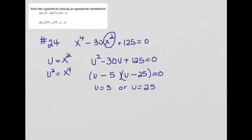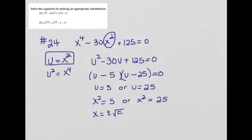But I'm not done because I'm supposed to solve for x, not u. Now I'll take u equals x squared and substitute back. So I have x squared equals 5 or x squared equals 25. Solving each equation, I get x equals plus or minus the square root of 5, or x equals plus or minus 5. Make sure you use the plus or minus.